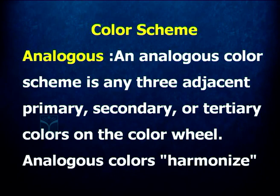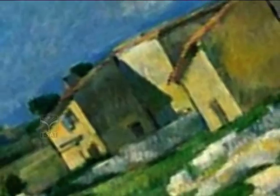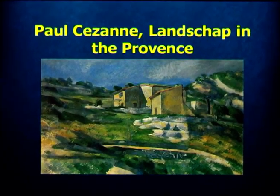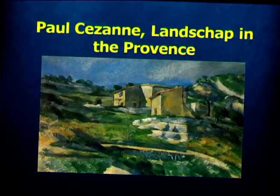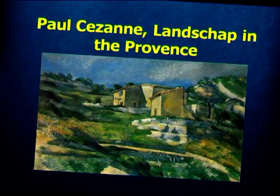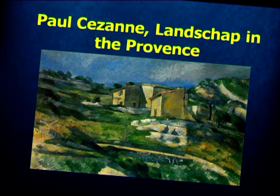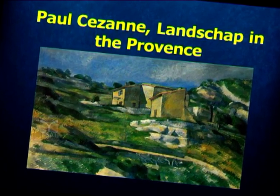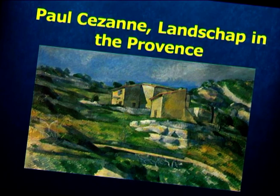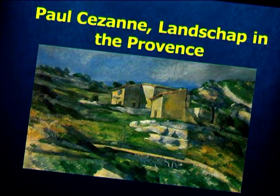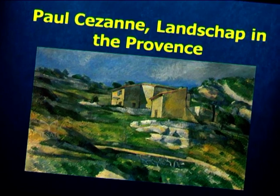For example, you take yellow, yellow-green, and then green — they fall one after another, creating harmony when used in a painting. Looking at this color scheme by Paul Cézanne — a very important artist in Western modern art who painted extensively still lives and landscapes — in this landscape example, you can see the bluish greens, greens, and yellows fall almost close to each other on the color wheel. This is an example of an analogous color scheme.